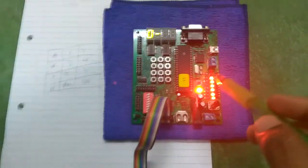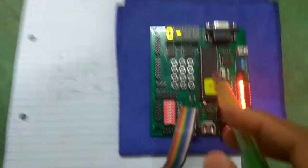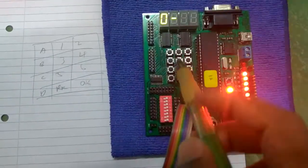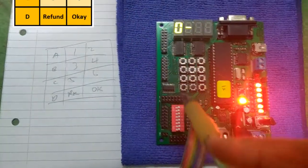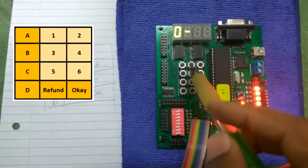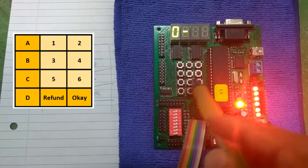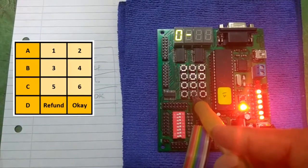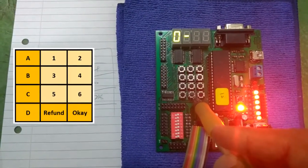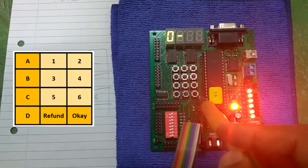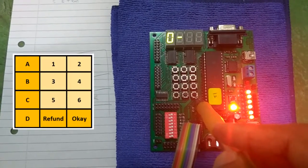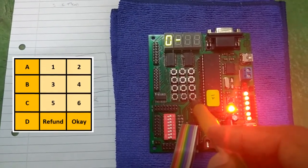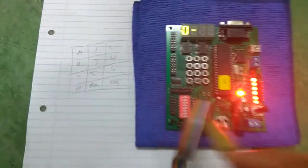The way the keypads are designed is the left column shows A, B, C, D and the rows are numbered one through six. The middle bottom button is for refund and the right corner bottom button is for okay to accept. The dip switches act as the amount of money that's put into the system.